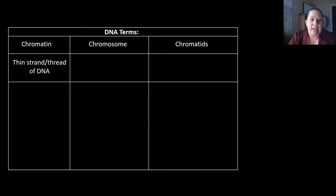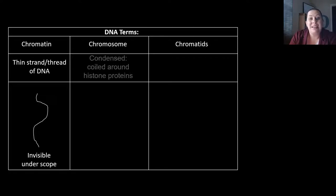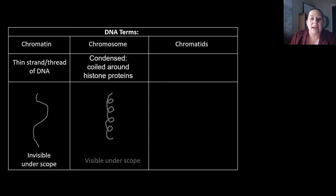Some DNA-type terms: chromatin is a thin strand or thread of DNA. It is invisible under the microscope because it is so thin and not condensed enough to see very well. However, chromosomes condense when chromatin coils around proteins that we call histone proteins — they're actually visible, we can see them under the microscope when they're condensed around those histone proteins.